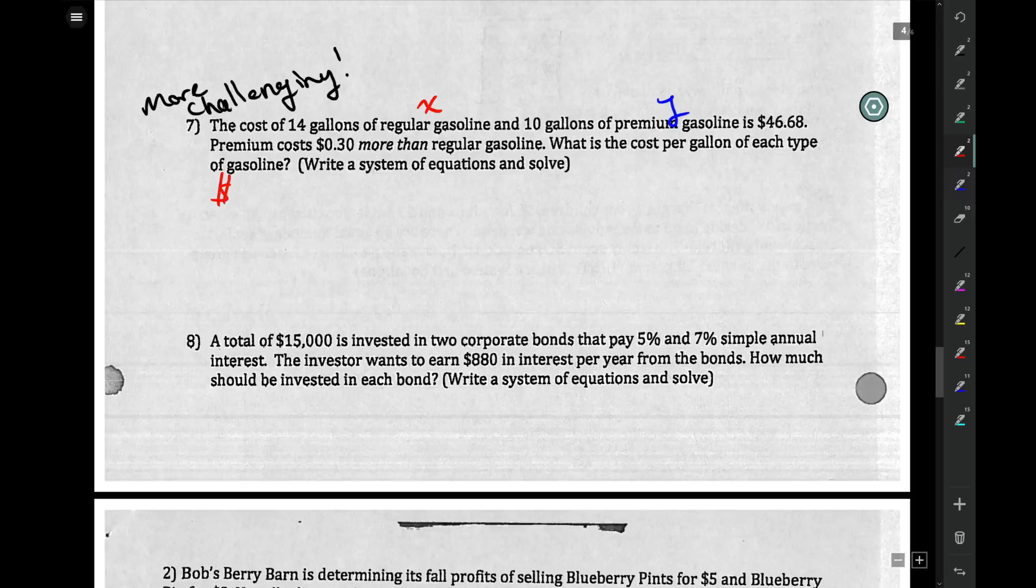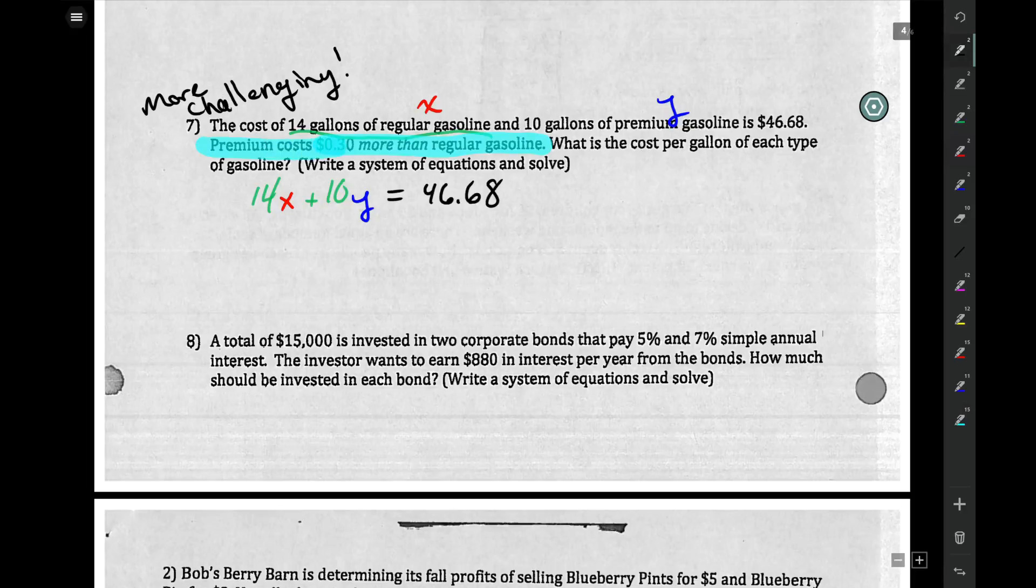Our number is we have 14 gallons of regular gas, so 14x, and we have 10 gallons of the other gas, premium. And we know that between the two of those, it's equal to 46.68. Now what we're trying to find is how much each is. And they give you this little thing here: premium costs 30 cents more than regular. So let's think of this. If premium was, say, 3 bucks, that means regular, since it costs 30 cents more, must be 2.70.